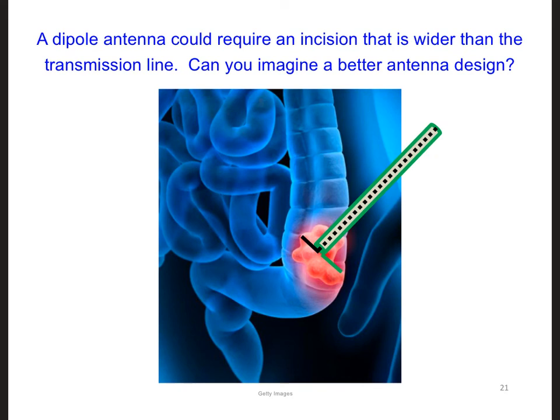What shape would you suggest for an antenna for this application? A dipole antenna is not really ideal because it would probably extend wider than the transmission line itself. One of the dipole arms would have to extend outwards from the outer conductor. This means we not only have to make an incision to fit the transmission line into the body, but would also need a wider incision to fit the dipole antenna. Spend a minute brainstorming what antenna shape might be more ideal for this situation.